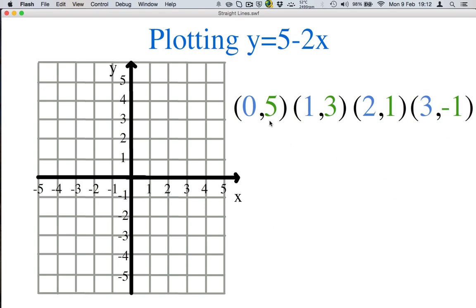So, let's plot (0,5). That means we go horizontally along for 0 and then up 5. So, that brings us up here. (1,3). We start at (0,0) and we go 1 across, 3 up.